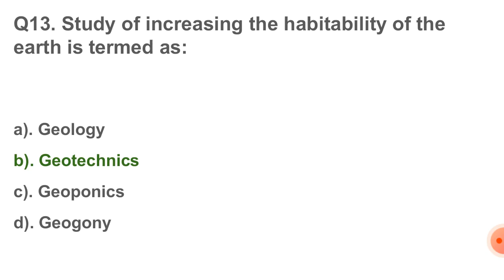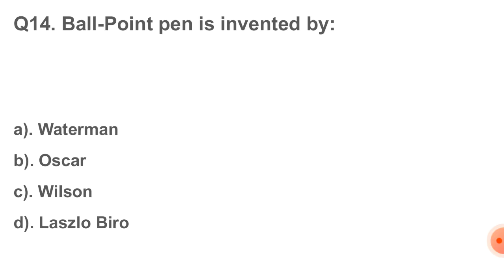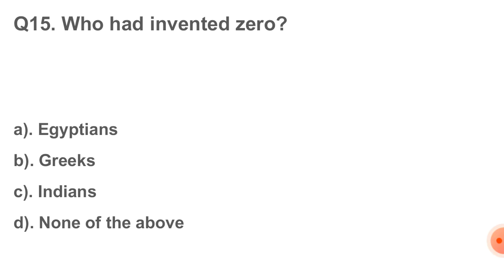Question number 14: the ballpoint pen was invented by. Correct answer option number D, that is Laszlo Biro. And next question: who invented zero? The correct answer is option number C — Indians, by Aryabhata.